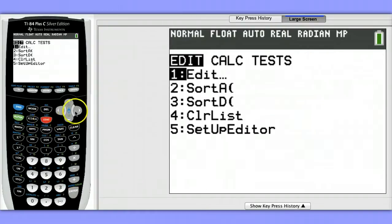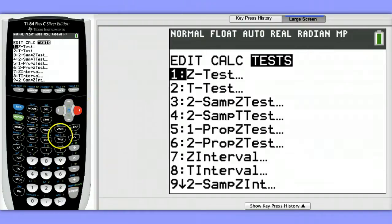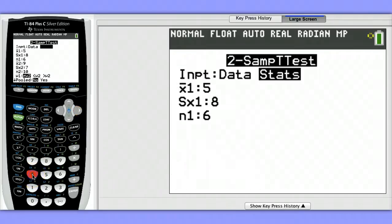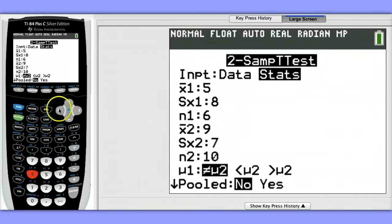Next, hit STAT, go over to Test, choose Option 4, Two-sample t-test. Although we could have figured out those summary statistics for ourselves, I've entered the data in my calculator, so let's choose the data option.